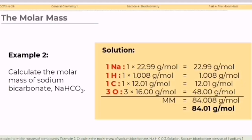Simplifying, we get 84.008 grams per mole. Since values with two decimal places limit the number of significant figures, we round off the answer to two decimal places, hence the final answer is 84.01 grams per mole.